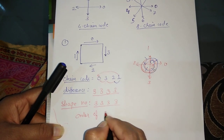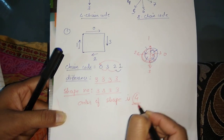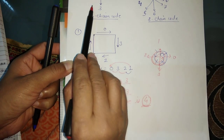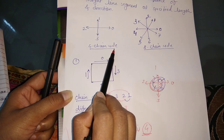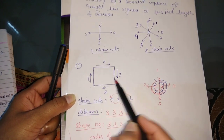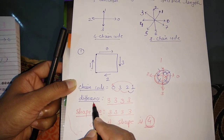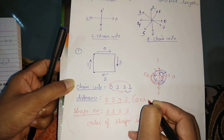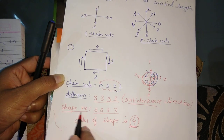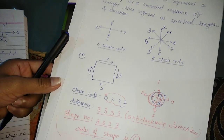You copy all values starting from the lowest, so the shape number is 1, 3, 3, 3. The order of the shape is 4, since there are 4 elements: 1, 2, 3, and 4. So for this simple shape: identify the chain code using direction codes (right=0, upward=1, left=2, downward=3), find the difference anticlockwise, then determine the shape number and order.